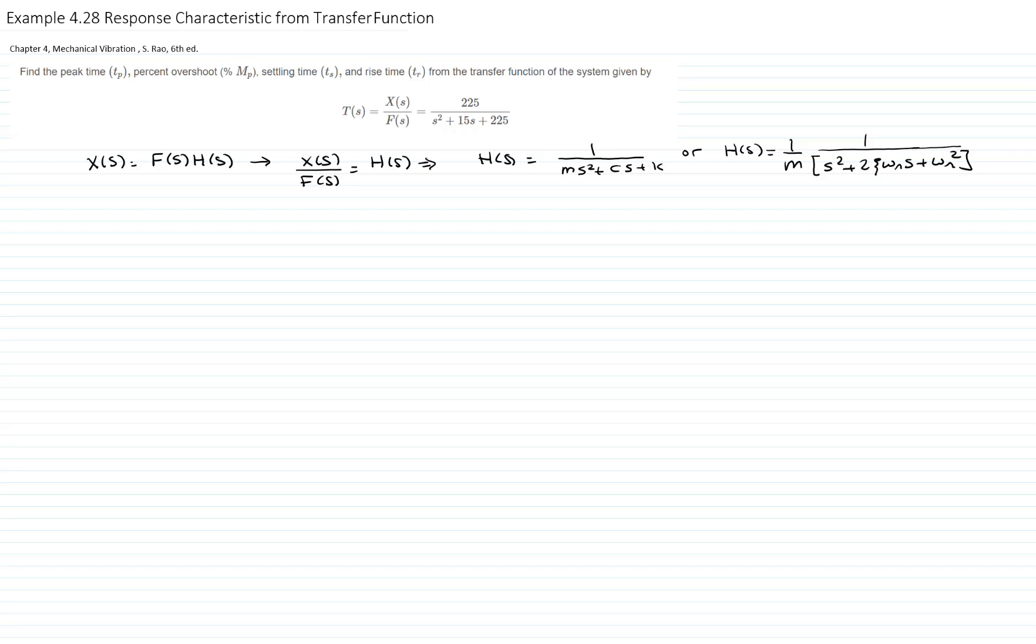And here we are given the transfer function. So by observing this transfer function, we know that omega squared is 225. Therefore, omega n is 15 radians per second.